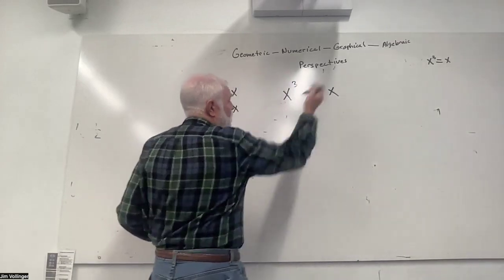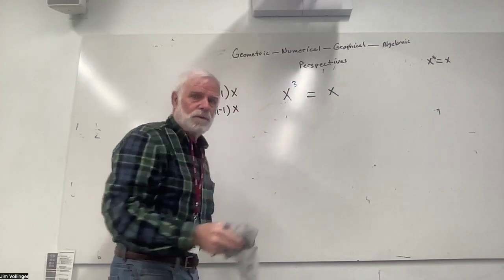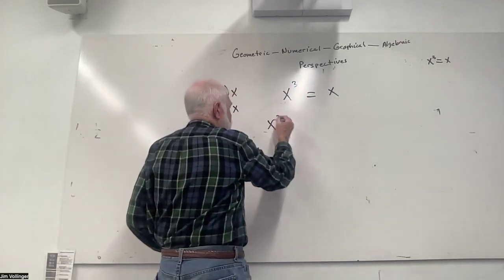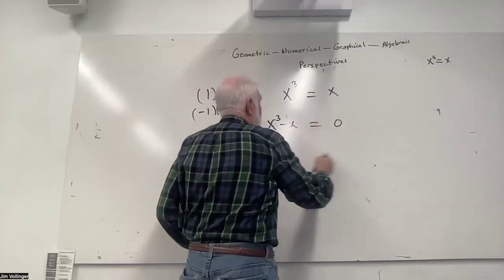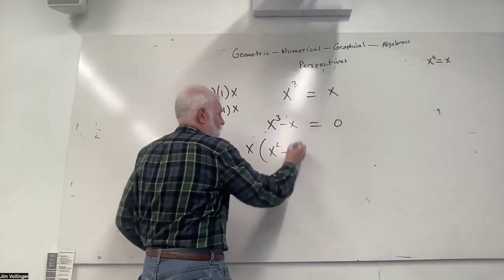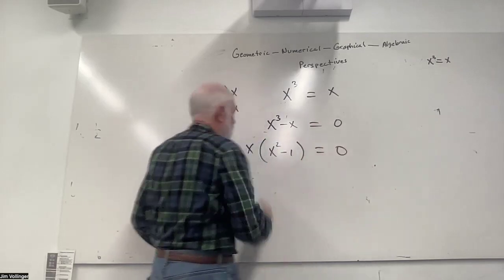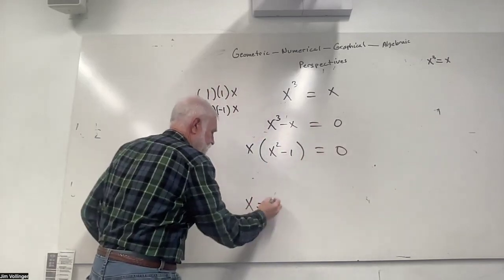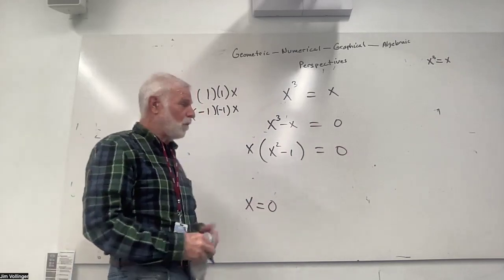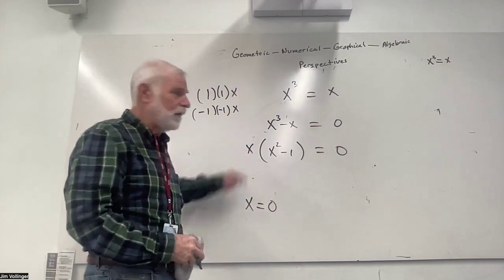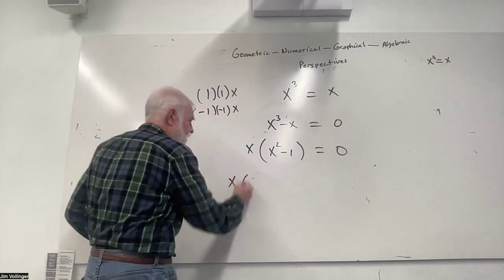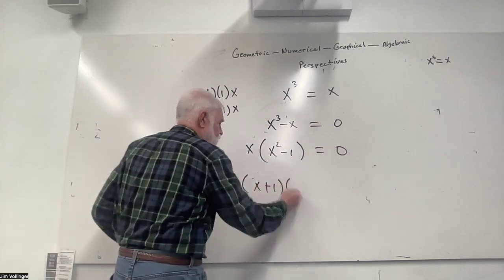From an algebraic perspective, the rule is: get your variables together. They have a common dimension of x, giving us x times (x squared minus 1) equals zero. x squared minus 1 equals zero for the same reasons that length times width times height equals zero when one dimension disappears. And there are two ways to continue — one is the difference of two squares.